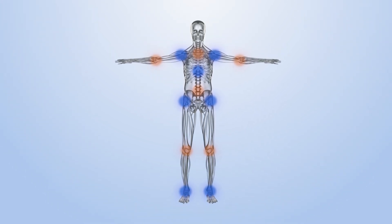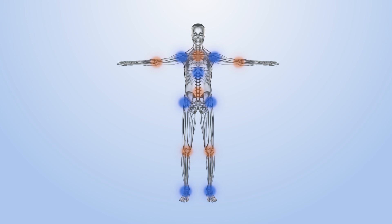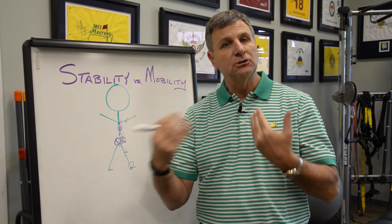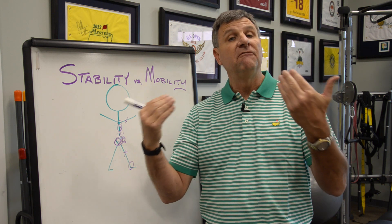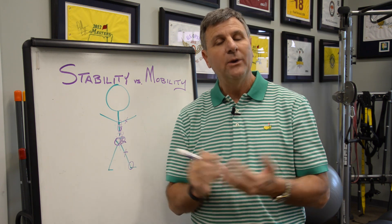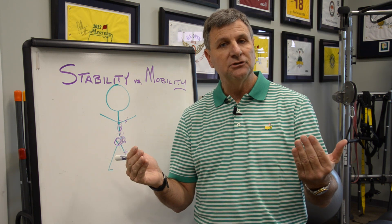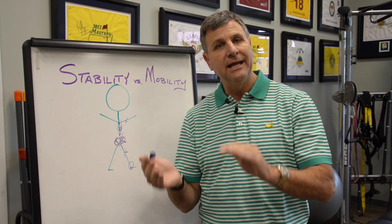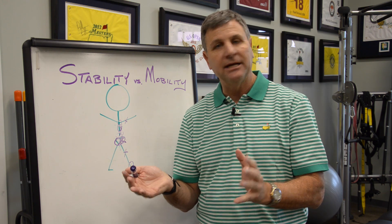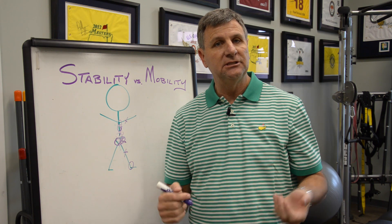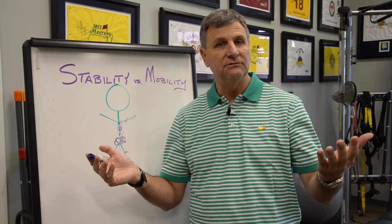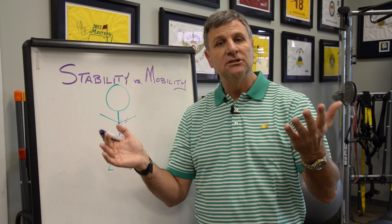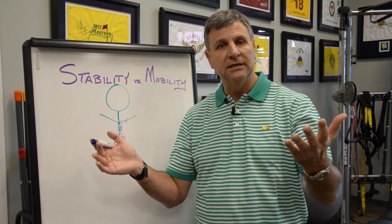We use the stability-mobility continuum to identify areas with mobility restrictions, and as we set up our treatment program, we attack those mobility dysfunctions first. Oftentimes all we have to do is restore mobility back to the joints where it's not happening, and all these other dysfunctions we see will flip — they'll take care of themselves. The core will come back to being stable, but it's not going to be stable if the joints adjacent to it are driving it to be unstable.